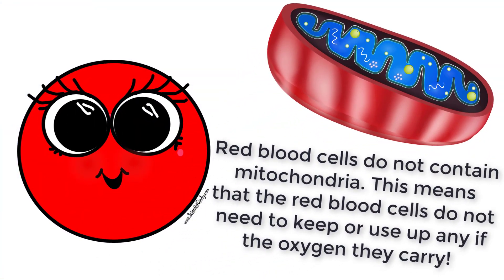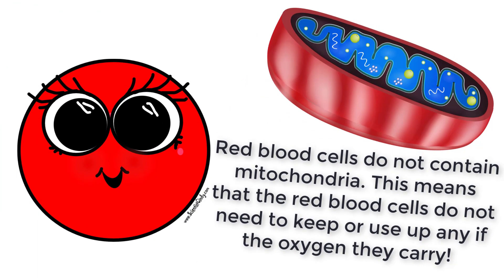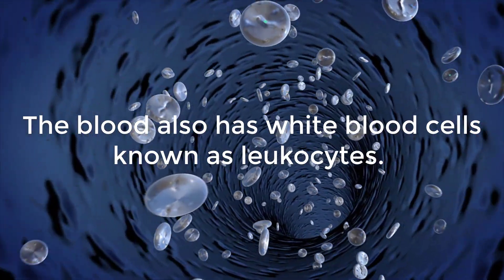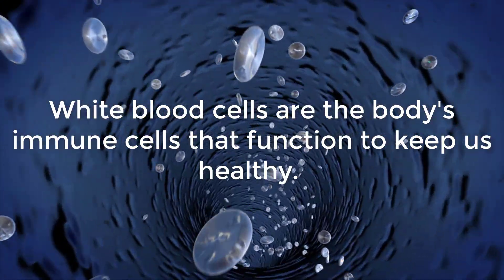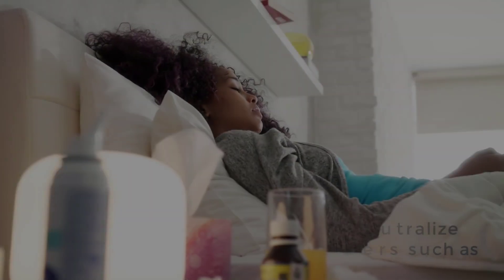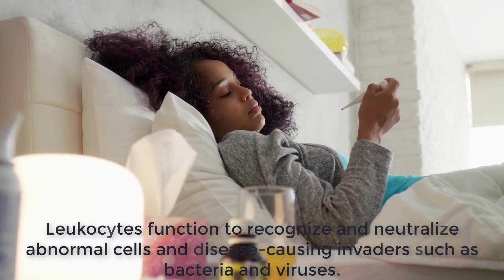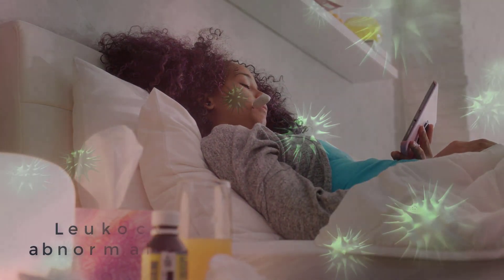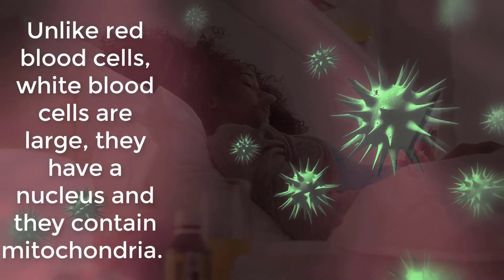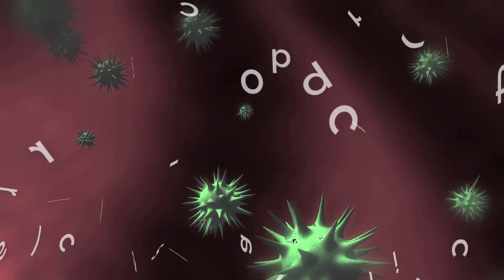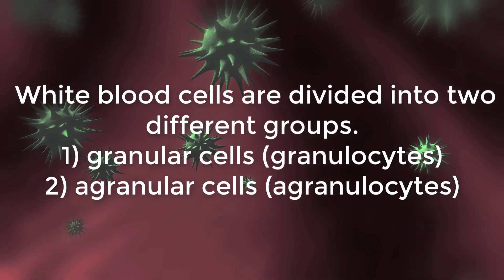Red blood cells do not contain mitochondria, meaning they do not need to keep or use any of the oxygen they pick up. The blood also has white blood cells, known as leukocytes. White blood cells are the body's immune cells that function to keep us healthy. They are large, have a nucleus, and contain mitochondria. White blood cells can be granular or agranular.